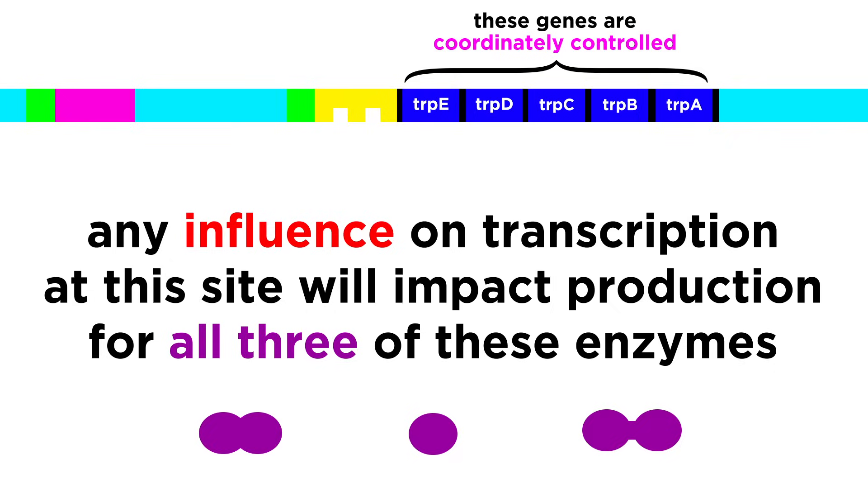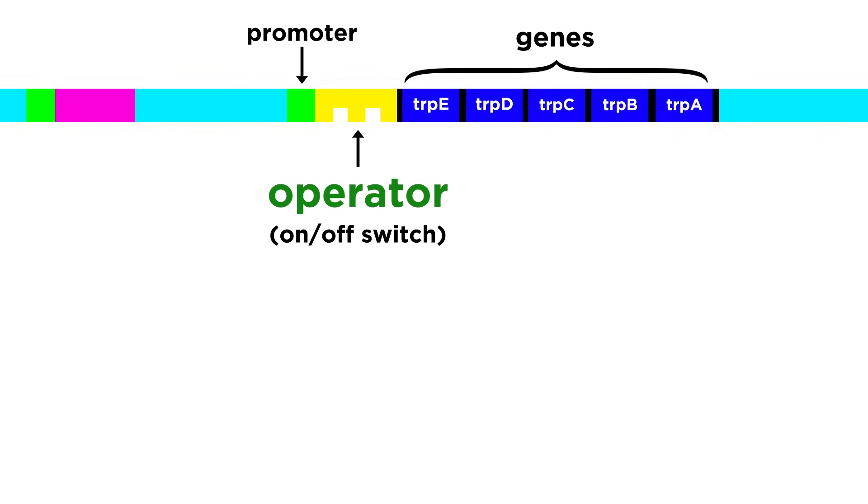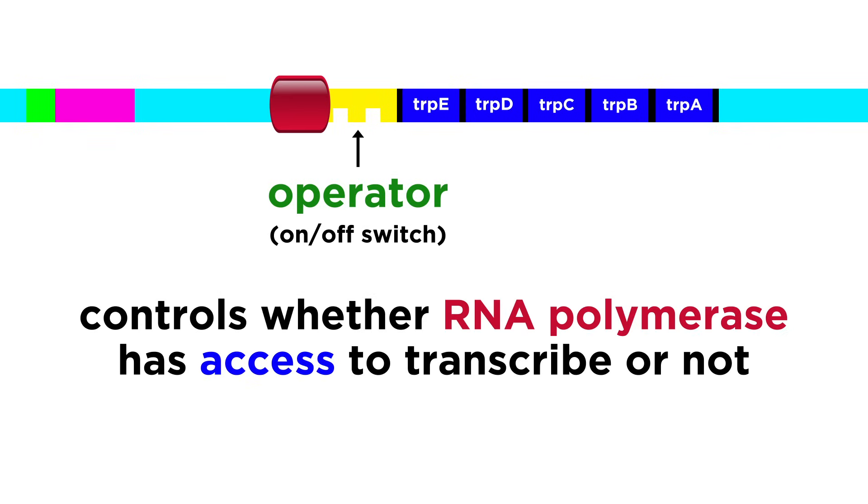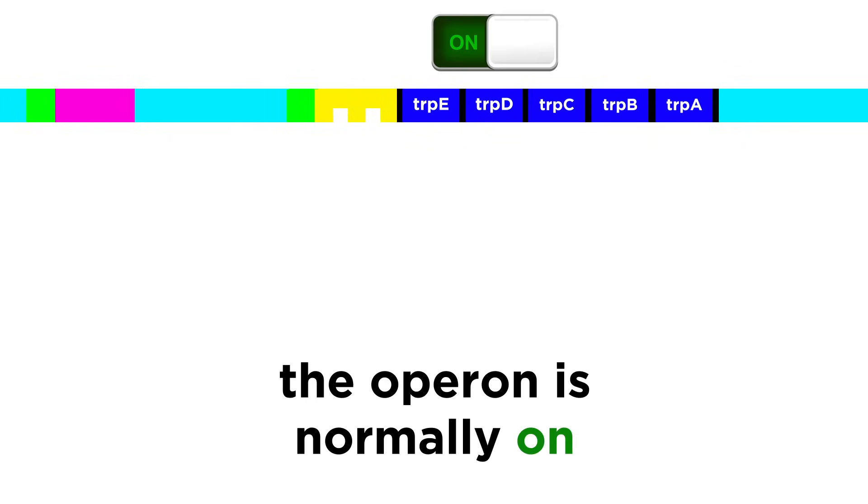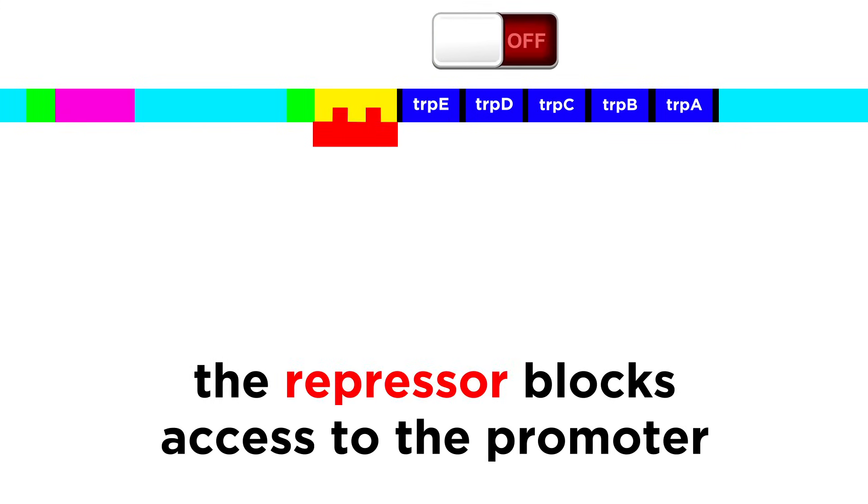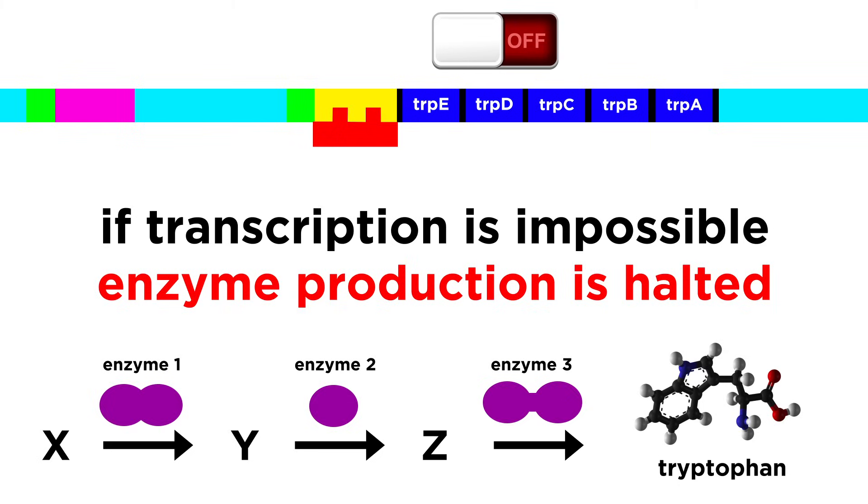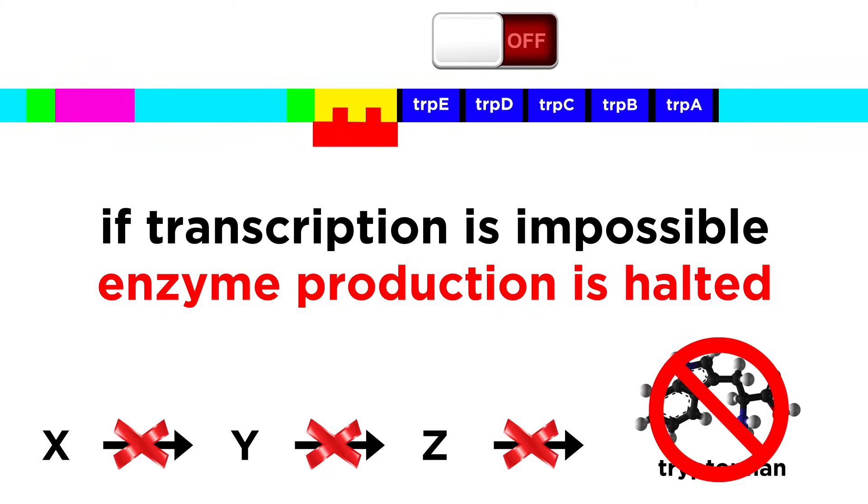This means that these five genes are coordinately controlled. Any influence on the transcription of these genes will impact the production of all of these enzymes. There is a segment of DNA, in this case in between the promoter and the first gene, which operates as an on-off switch. This is called an operator, and it controls whether RNA polymerase has access to transcribe or not. The promoter, the operator, and all these genes are altogether called an operon. Normally the operon is on, but something called a repressor can bind to the operator, which then blocks access to the promoter, so RNA polymerase can't do its job. If the genes can't be transcribed, the enzymes can't be produced, and the cell can't build tryptophan.